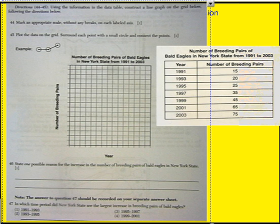So here's the next page, and I think I can just put the data table right here to the side. That should work just fine. So the first thing we need to do is mark an appropriate scale without any breaks on each labeled axis. So you look at your data table and figure out how you're going to put it. Now, they get you started. They already have the axes labeled for you. Year will be on the x-axis. Number of breeding pairs on the y-axis. You just have to figure out a good consistent scale. So I look at the years. I see it starts with 1991 and goes up to 2003.